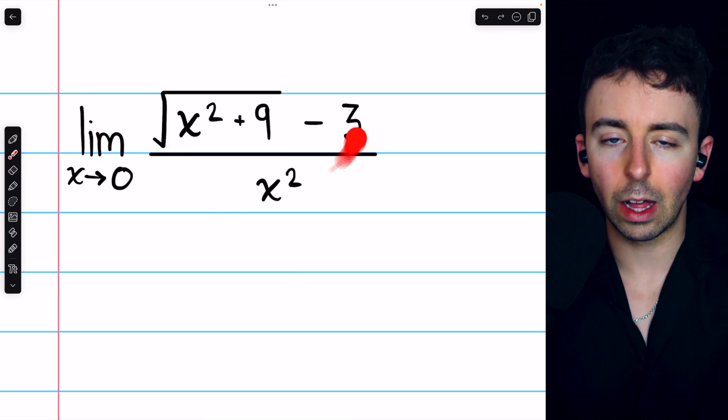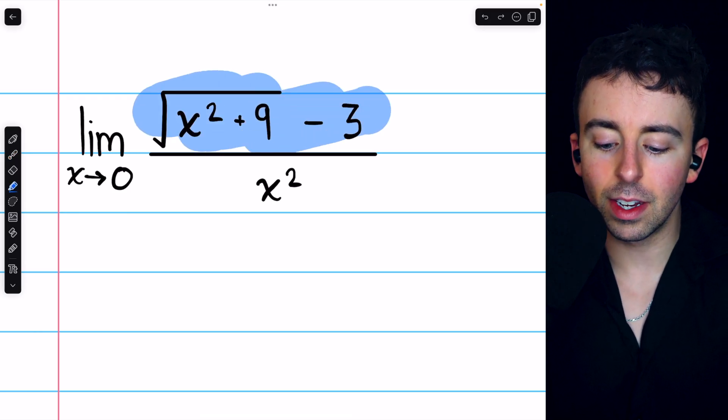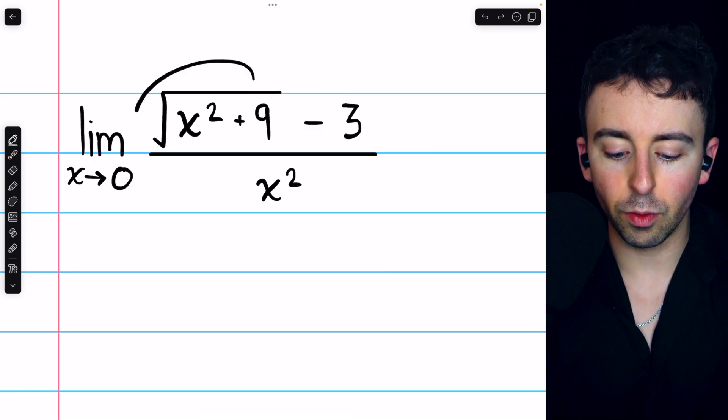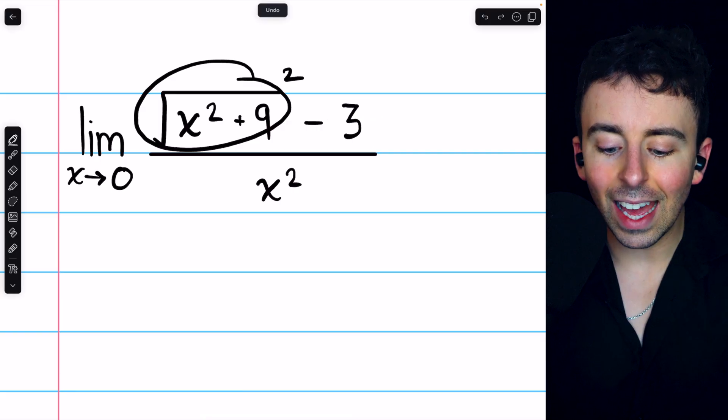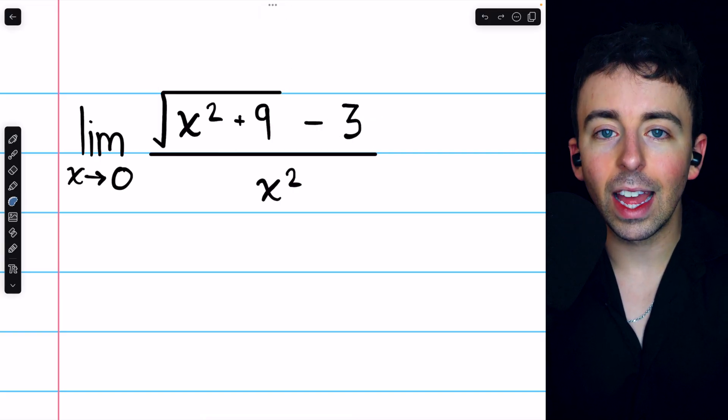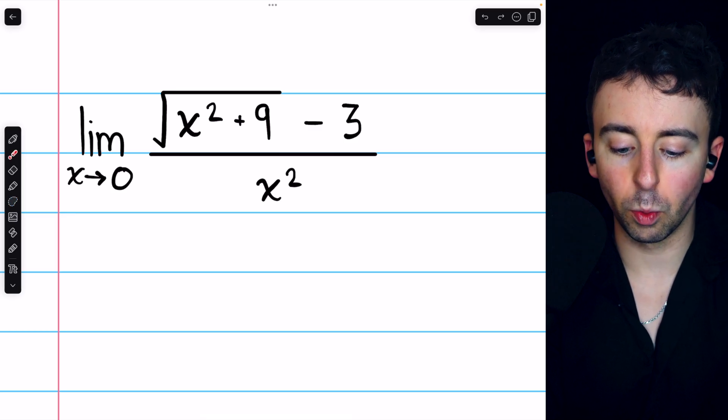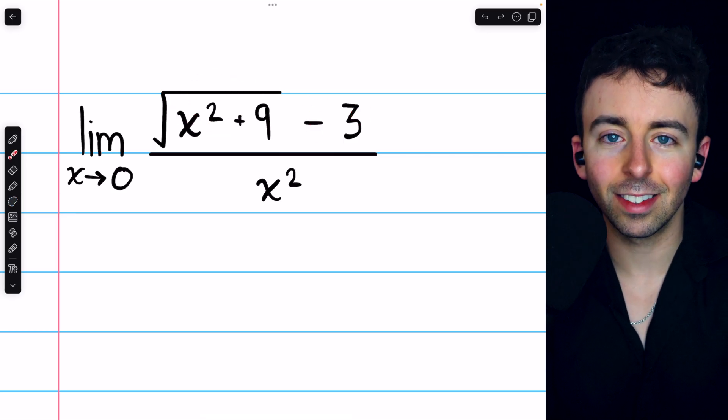to do something else to evaluate this limit. In the numerator, we would certainly prefer to have the difference of the squares of these two terms, because if we had that, then the square root would go away. The way that we can get that is by multiplying and dividing by the conjugate. The conjugate of one thing minus another is the one thing plus the other.